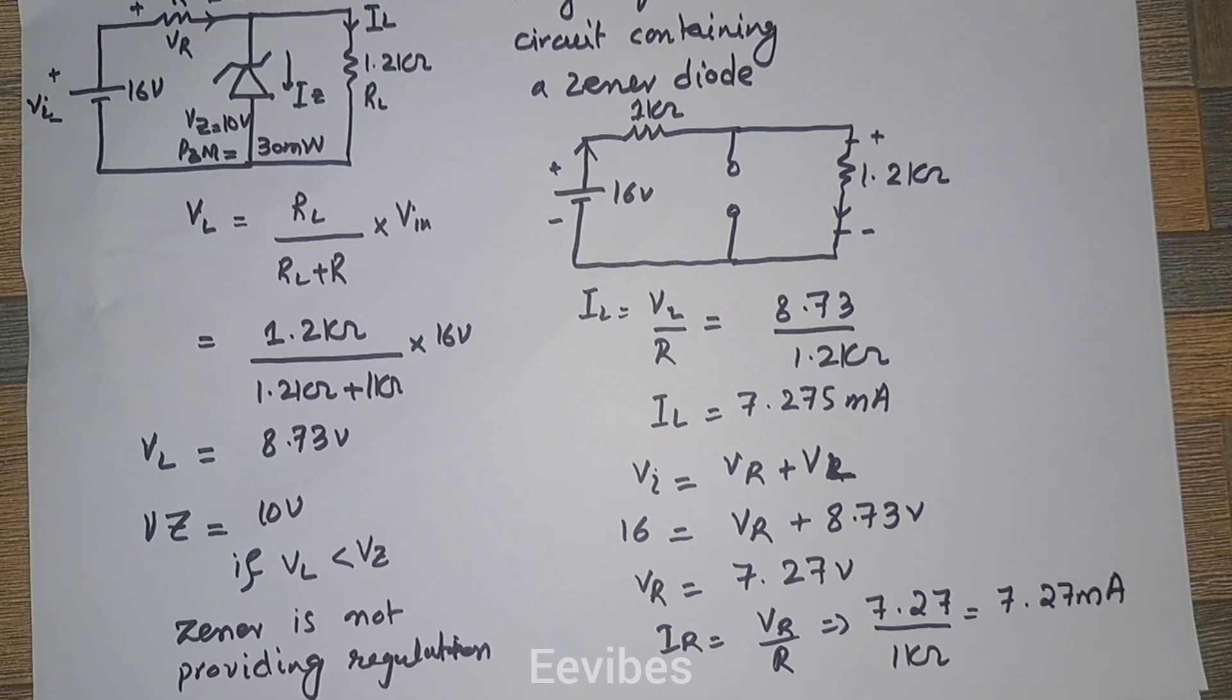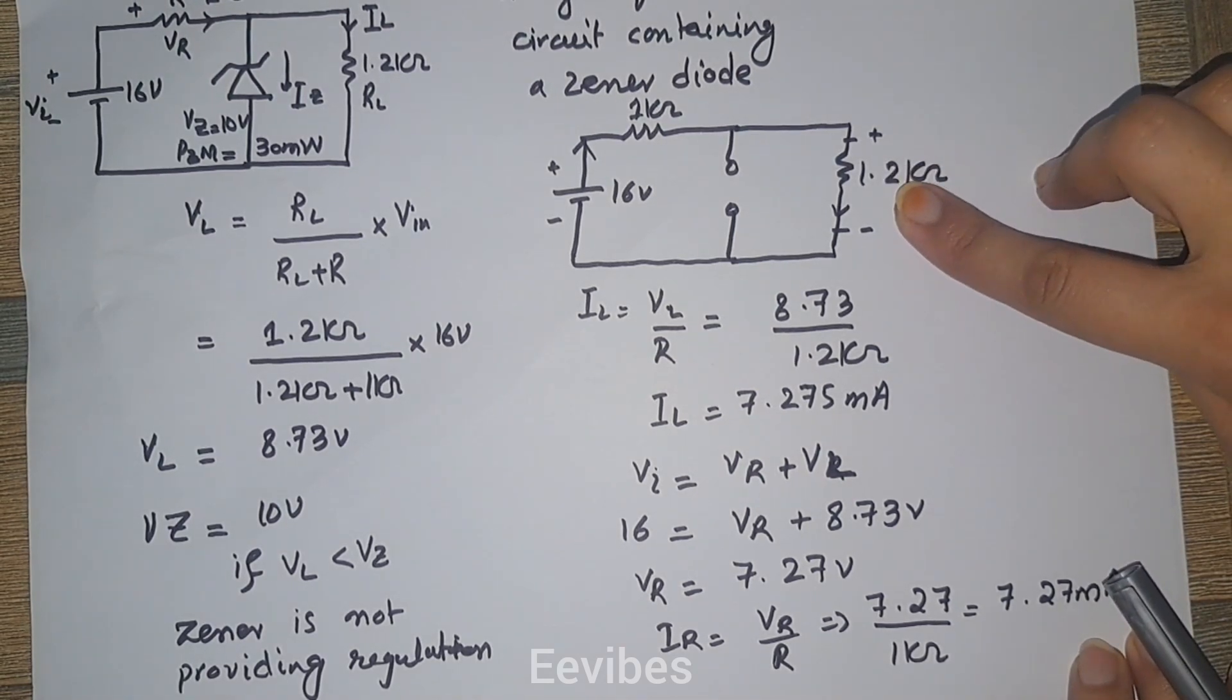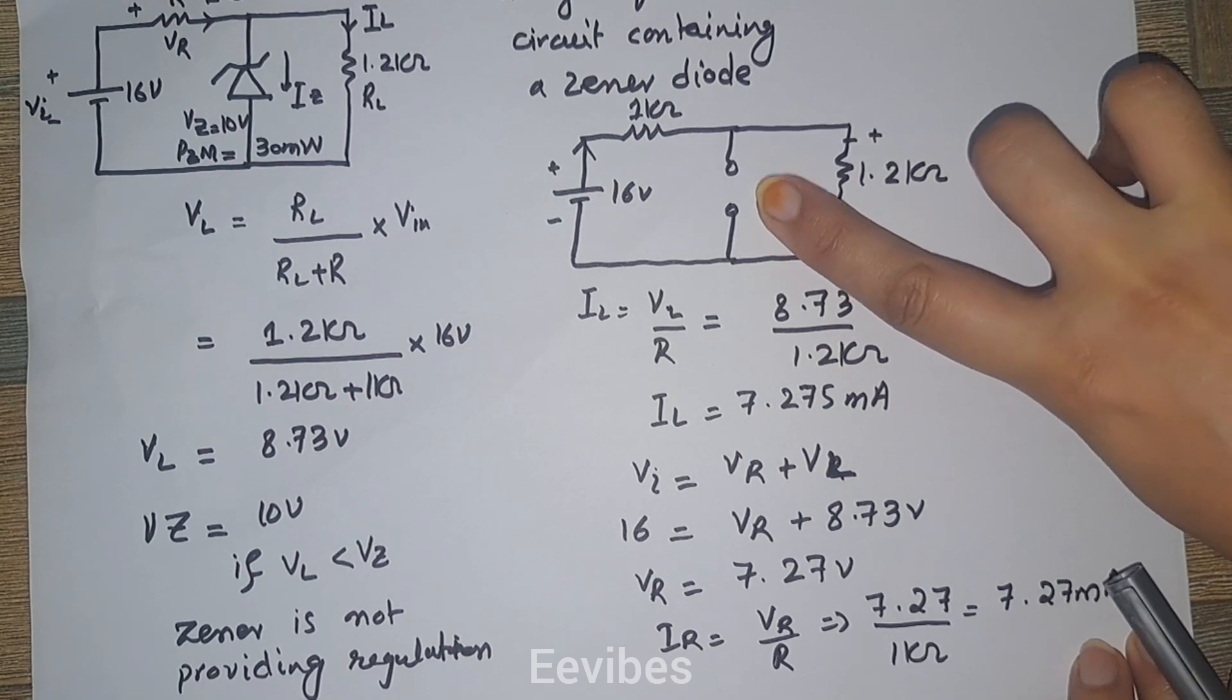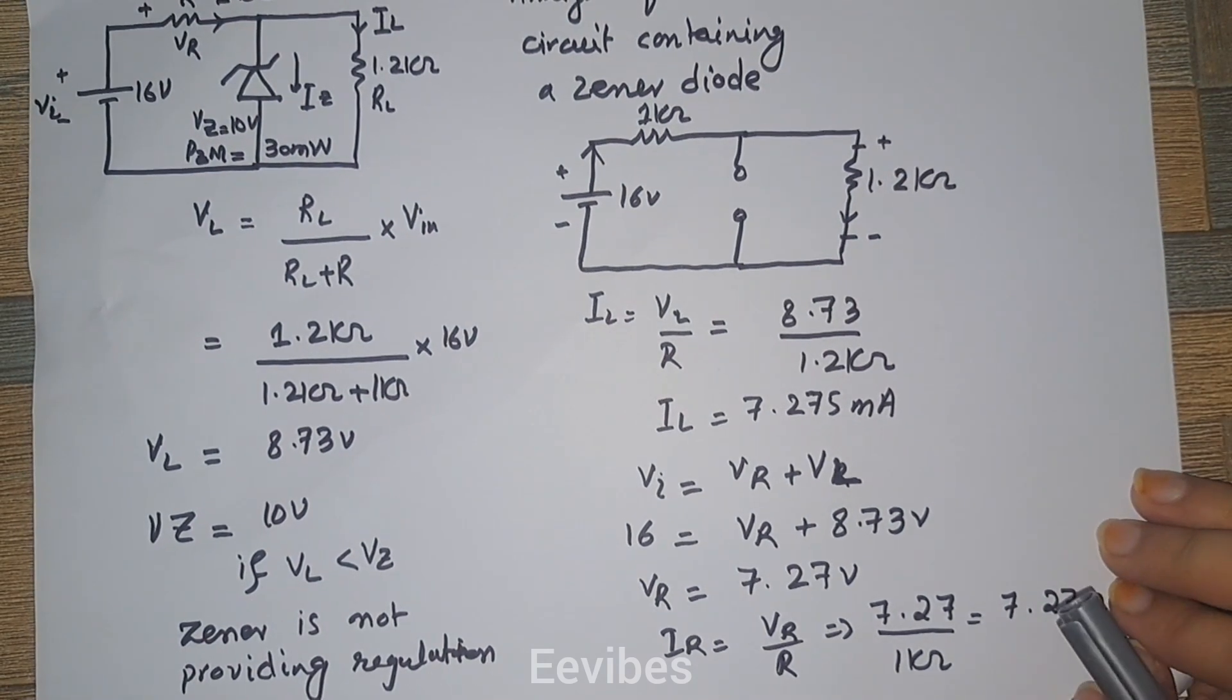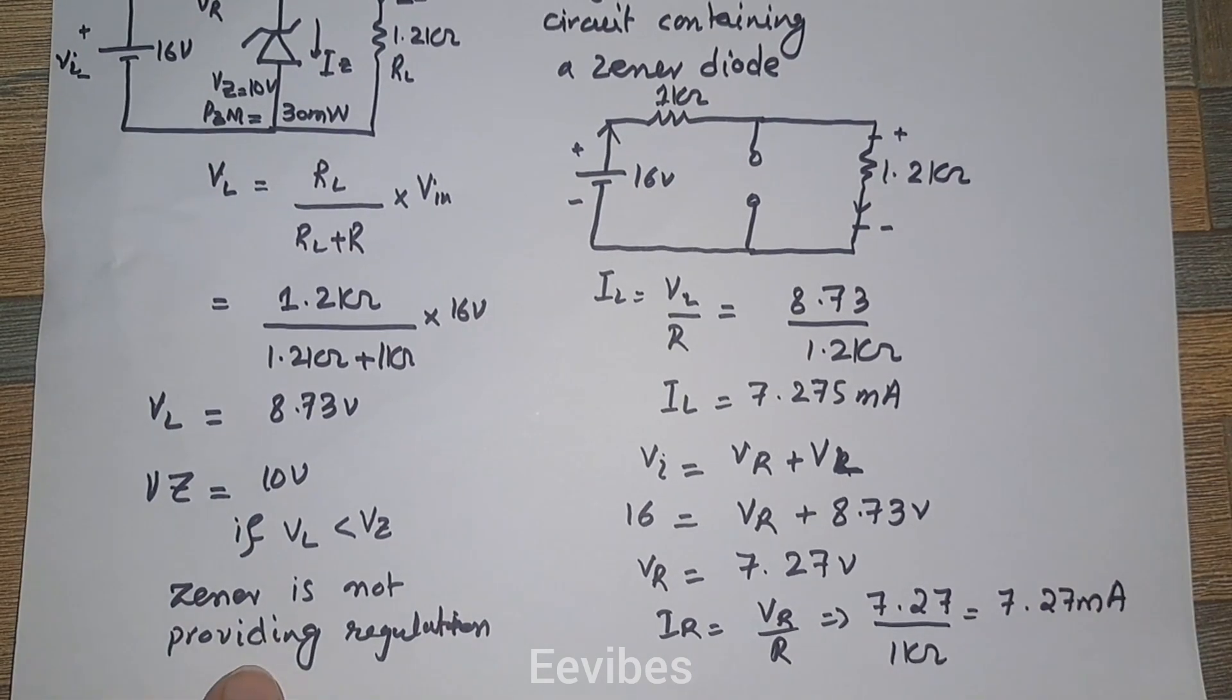So this is the first approach. When the zener voltages are greater than the voltages delivered to the load, you have replaced the zener with an open circuit. Now let's consider the second scenario in the second part of this lecture. Thank you for watching.